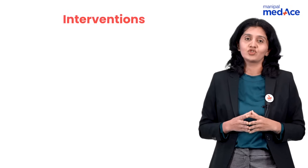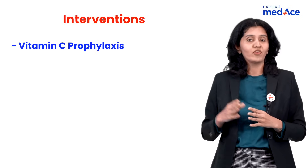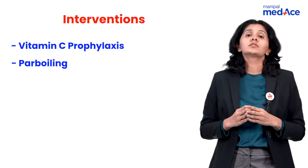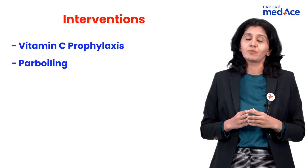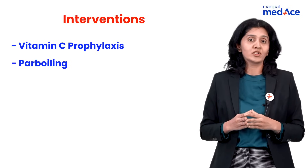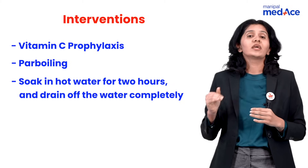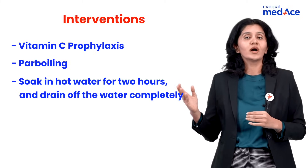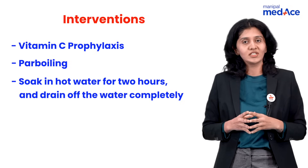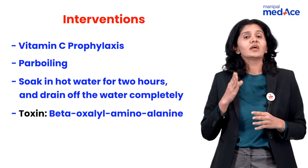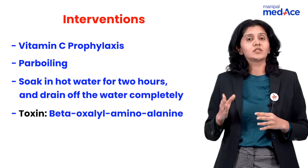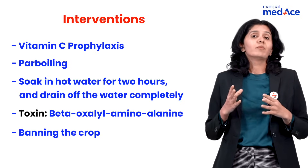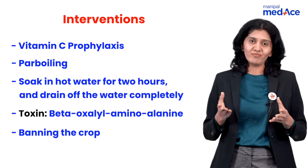How do we manage lathyrism? Through Vitamin C prophylaxis, power boiling, and soaking in hot water for two hours before use — as the toxin responsible is water-soluble. The toxin responsible is beta-oxalyl-amino-alanine (BOAA). Banning the crop is also recommended where possible.